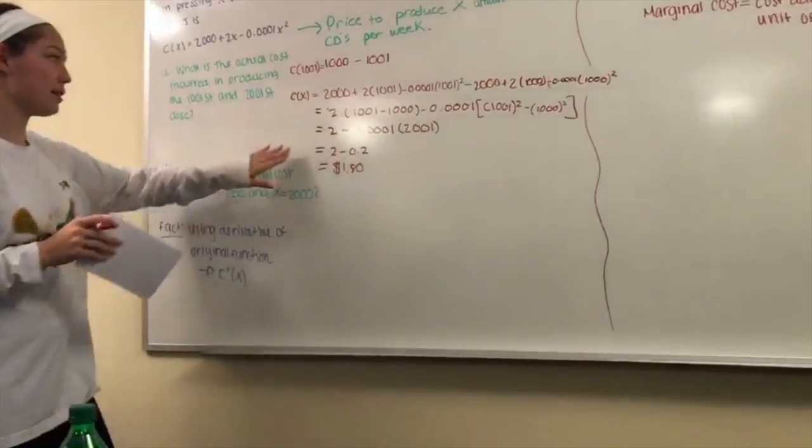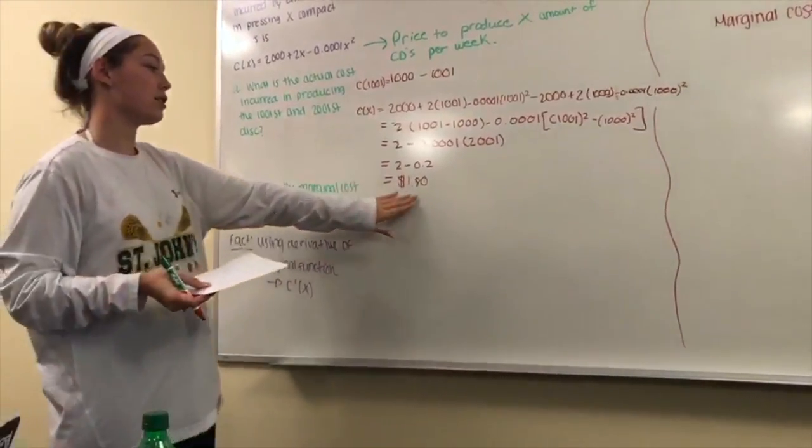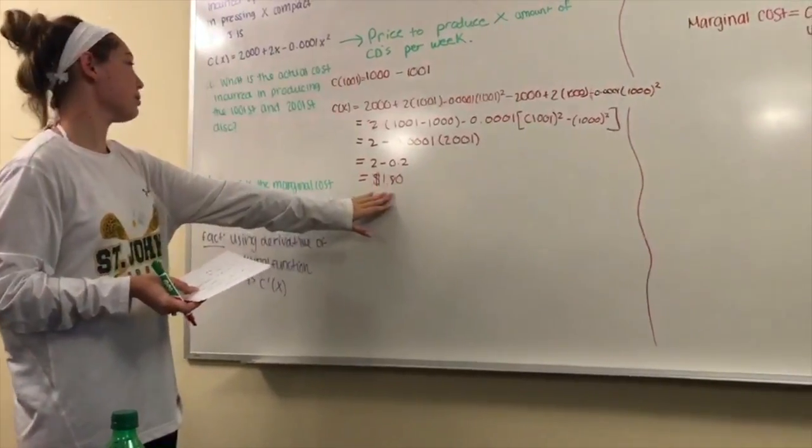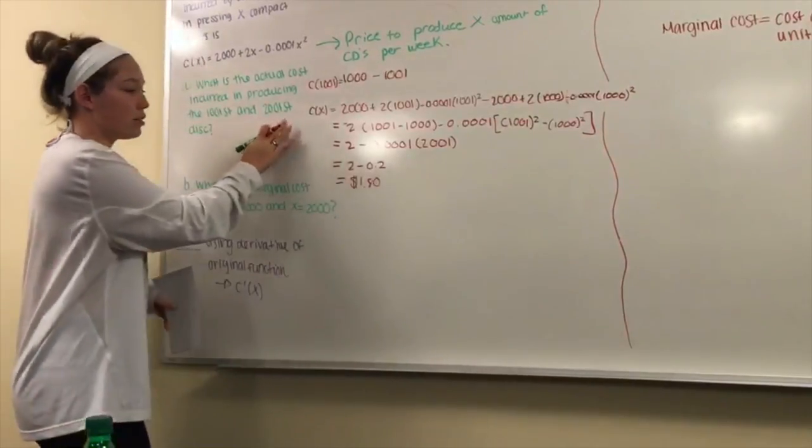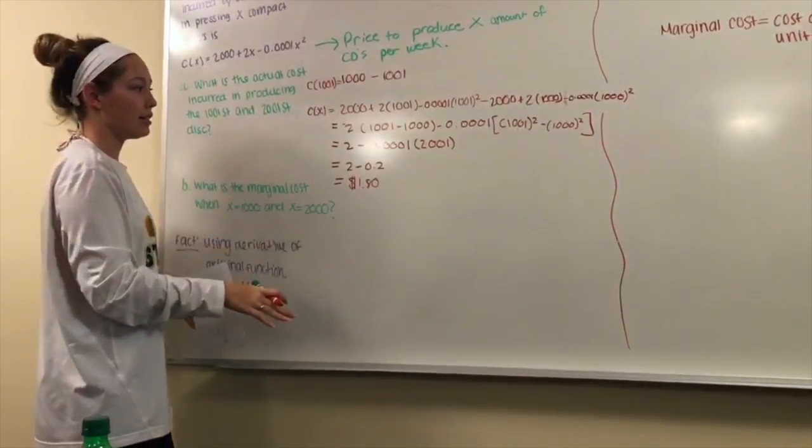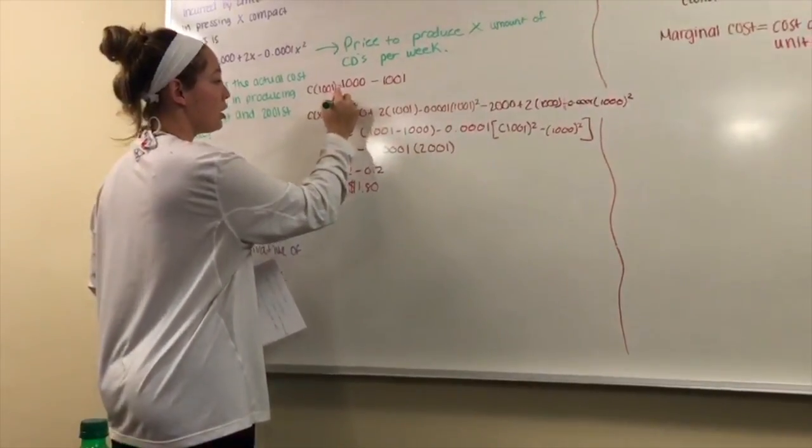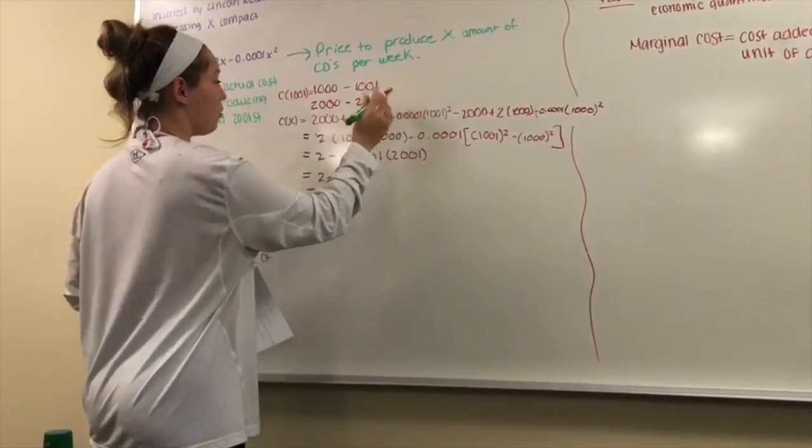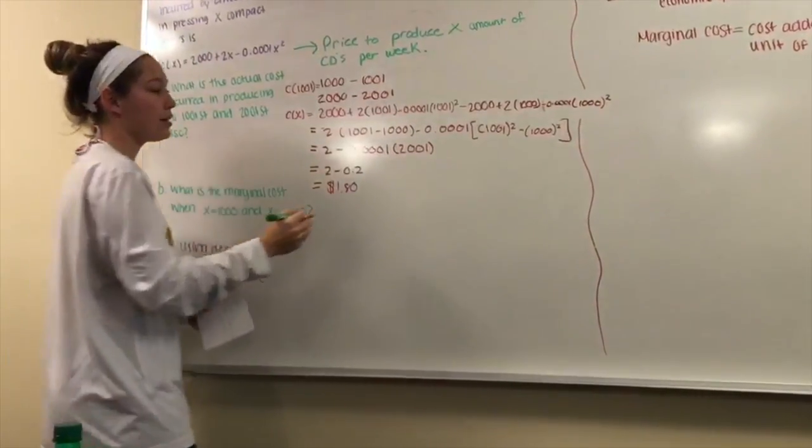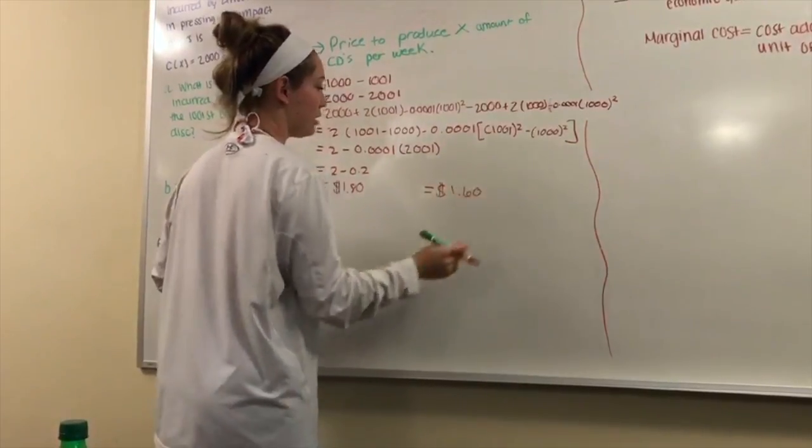Alright, so this is the answer to the first part of it which is 1,001, which is basically just going to be a dollar and eighty cents to produce the 1,001st disc. So for the 2,001st you're basically going to do the exact same thing but instead of using 1,000 and 1,001, you're going to be using 2,000 and 2,001 and do the exact same process and you should get one dollar and sixty cents.